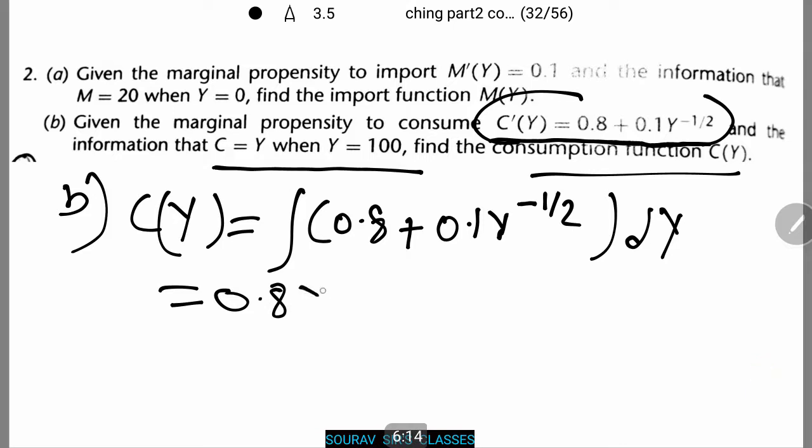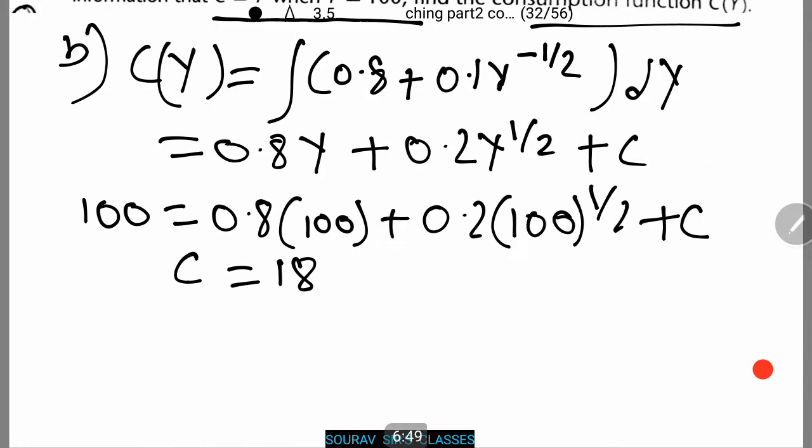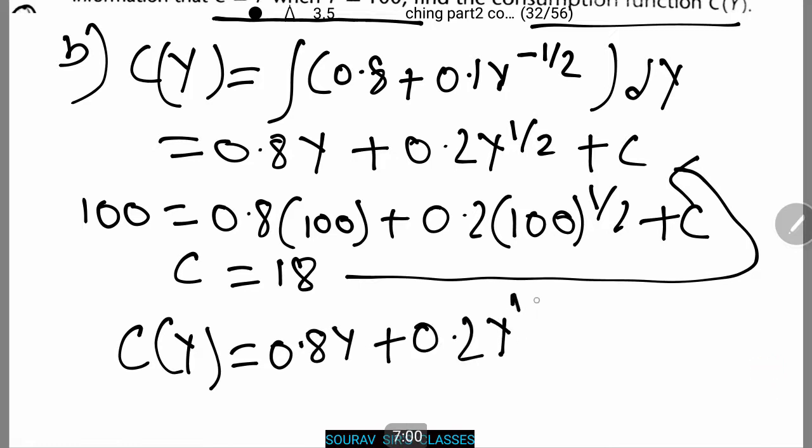This comes to 0.8Y plus 0.2Y to power half plus C. Now from the side information that we are given we can write 100 equals 0.8 × 100 plus 0.2 × 100 to the power half. The value of C comes to be 18. Thus we put the value of C in this equation after which we obtain C(Y) equals 0.8Y plus 0.2Y to power half plus 18. Very simple.